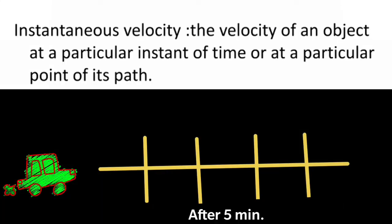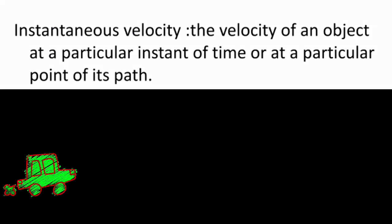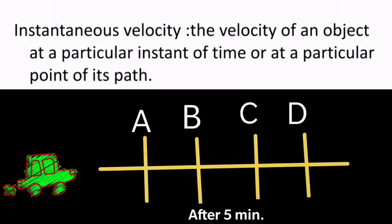Coming to instantaneous velocity — the velocity of an object at a particular instant of time or at a particular point of its path. For example, if you say the velocity of a car is 30 meters per second after 5 minutes, you are specifying the time — so after 5 minutes of its journey, its velocity is some value x. Or when you say the velocity of the car at point B is 10 meters per second, you are specifying a particular point. When you mention the velocity at a particular time or point of the journey, it is called instantaneous velocity.